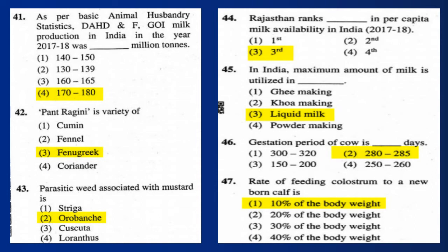Question 42: Pantragni is a variety of fenugreek. Question 43: The parasitic weed associated with mustard is Orobanche. Question 44: Rajasthan ranks third in per capita milk availability in India in 2017-18.